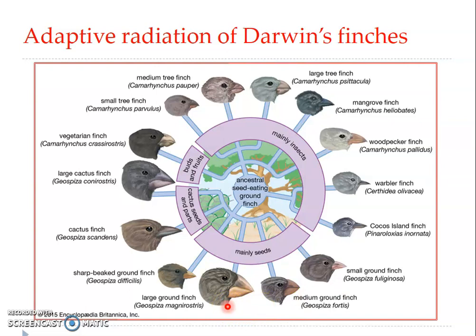Other ground finches feed primarily on the flowers of prickly pear cacti. The cactus eaters possess de-curved, flower-probing beaks. These cactus finches have very peculiar de-curved beaks adapted for probing flowers, and their beaks are thicker than those of typical flower-eating birds.